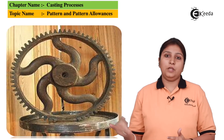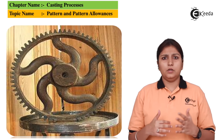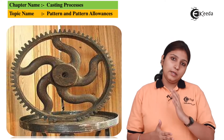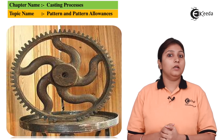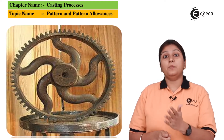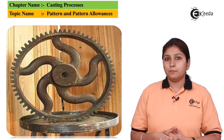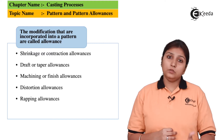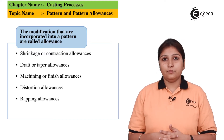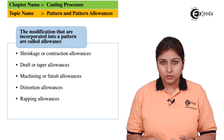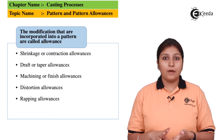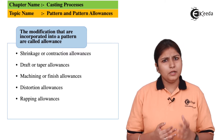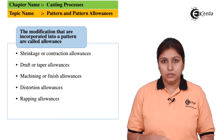If you can see the shape shown here, it is kind of an Ashoka chakra symbol — it has some shape, some size, and some objective. For making this, you need a pattern, so the role of pattern comes into picture. There are different types of patterns for making different objects. The allowances listed include shrinkage, draft, machining, and wrapping. These allowances are provided on the pattern itself so that the final product can be removed easily.